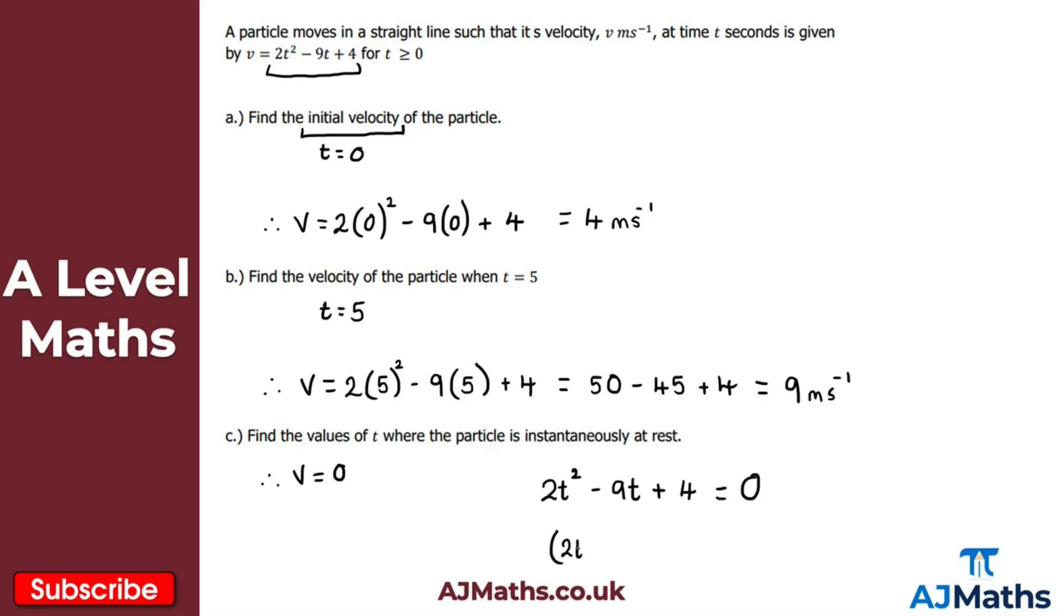What I'm going to get here is 2t minus 1, and also t minus 4, equal to zero. Obviously you can expand this to double check. So I'm going to get 2t², I'm going to get minus 8t and then minus 1t here, so that's going to give me the minus 9t, and minus 1 times minus 4 will give me positive four. So we know that works.